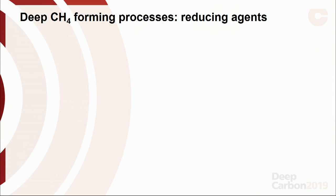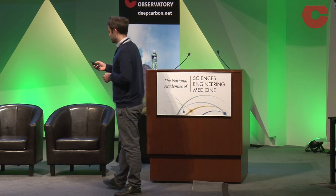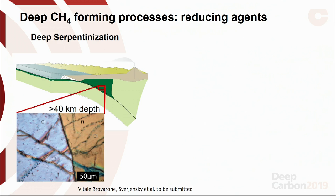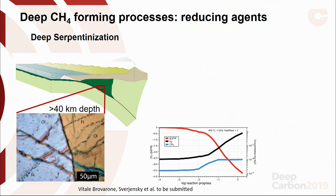The reducing agent — having hydrogen-rich fluids is very important to produce methane. There may be many processes, but the most important one is deep serpentinization — the equivalent of what we know at seafloor conditions or ophiolites, but happening at great depth. We have examples of this: serpentinization of olivine rocks in the subducted slabs of the Western Alps, with serpentine forming along cracks, exactly the same patterns as low-temperature serpentinization. Together with Dmitry Sverjensky, we have modeled these reactions at high pressure and temperature conditions.